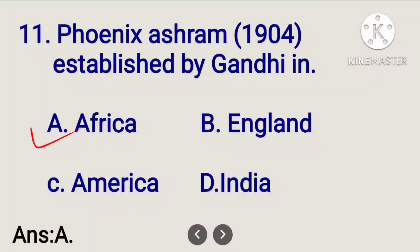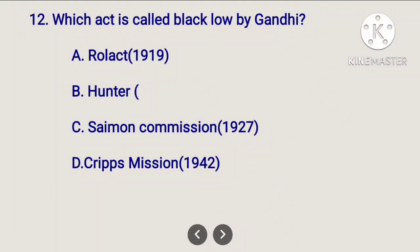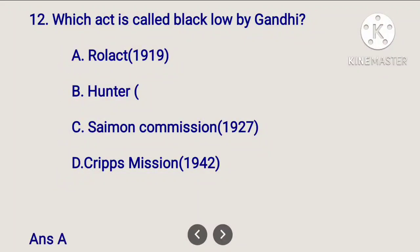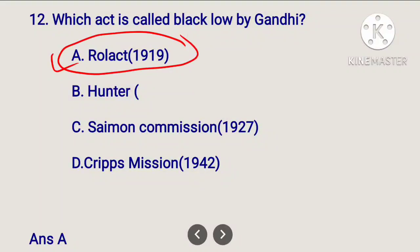The Black Law — also called the Asiatic Registration Act — was opposed by Gandhi. The options include Hunter, Simon, and Cripps Mission. The Black Law refers to the Asiatic Registration Act opposed by Gandhi in South Africa.